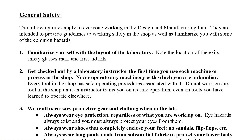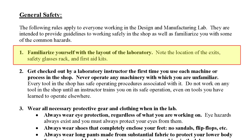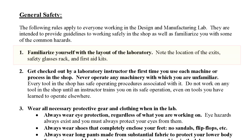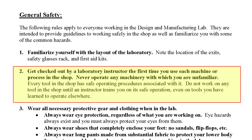Moving to page 4, the first rule under general safety is to familiarize yourself with the layout of the laboratory. We will do this together during the orientation lab that takes place the first week of the semester. Rule number 2 is to get checked out by a lab instructor the first time you use each machine or each process in the lab. Regardless of whether you've used a piece of equipment elsewhere, we want to teach you the methods and protocols we use in our laboratory to ensure everyone uses the equipment the same way and to mitigate the chance of accidents occurring.